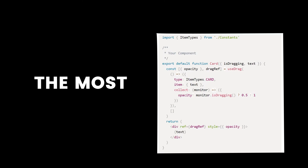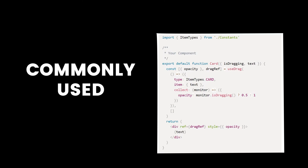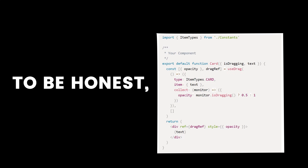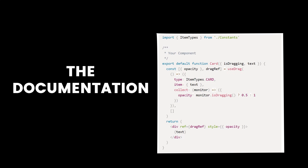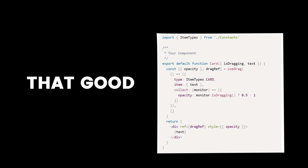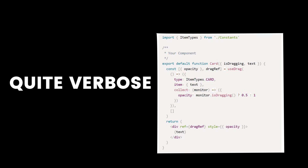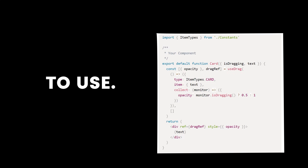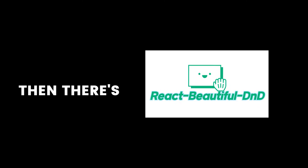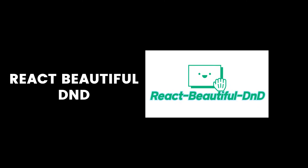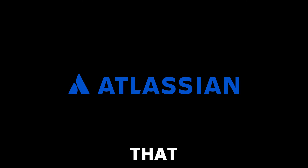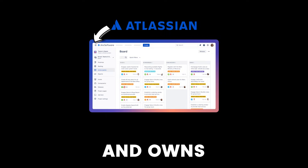Before we begin, we need to decide which library is the best. The most commonly used one is React DnD, but the documentation is not that good and it's quite verbose and hard to use, as you can see from the code. Then there's React Beautiful DnD, and it's by Atlassian, which is the company that made Jira and owns Trello.